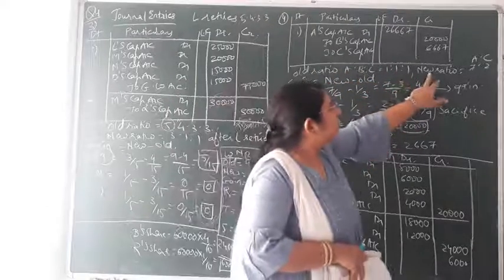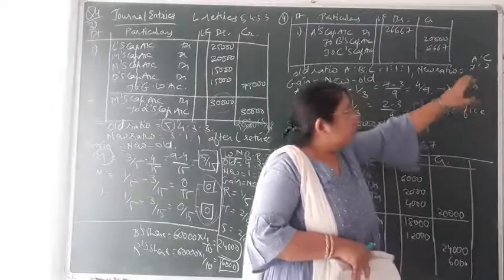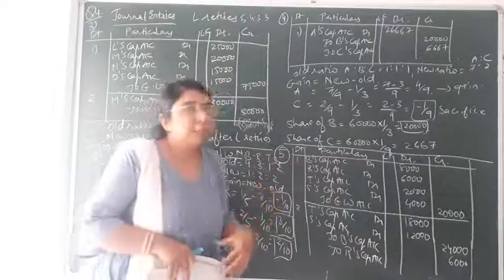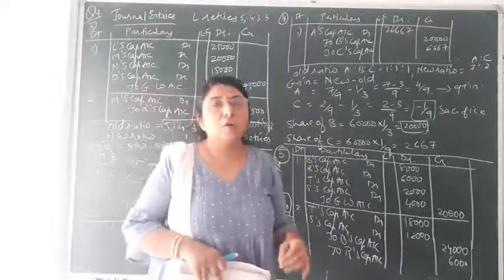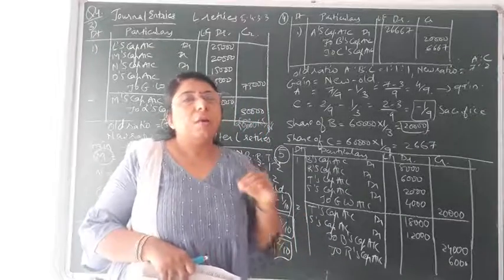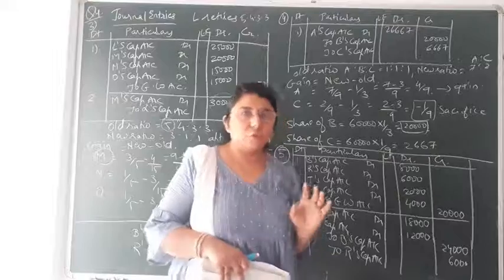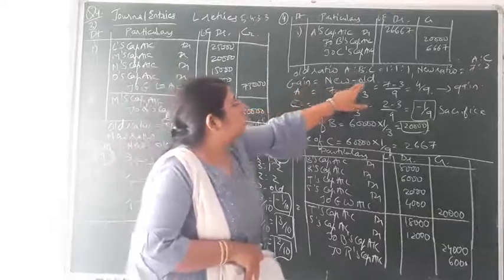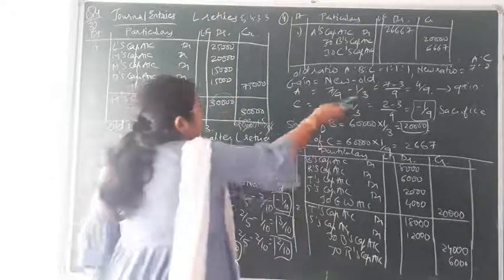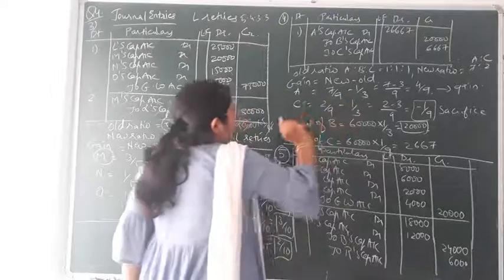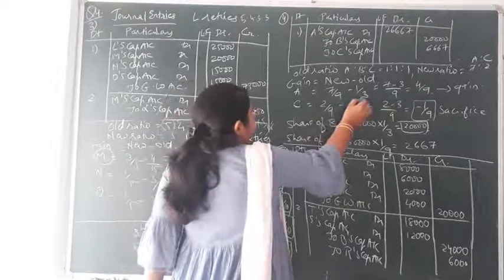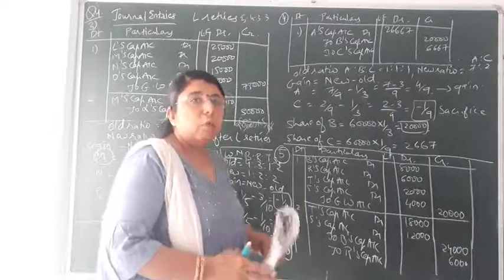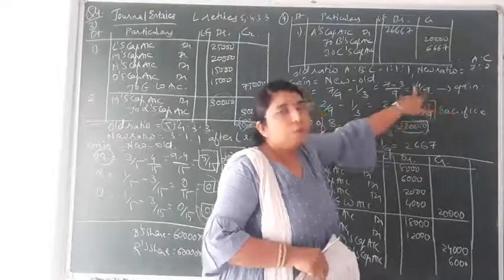The new ratio between A and C is 7:2 since B is retiring. We have to find the gaining ratio because the share of the retiring partner is to be distributed amongst the continuing partners in their gaining ratio. Using the gain formula — new share minus old share — for A: new ratio 7/9 minus old share 1/3. Taking LCM as 9: 7/9 minus 3/9 = 4/9. So A's gain is 4/9.